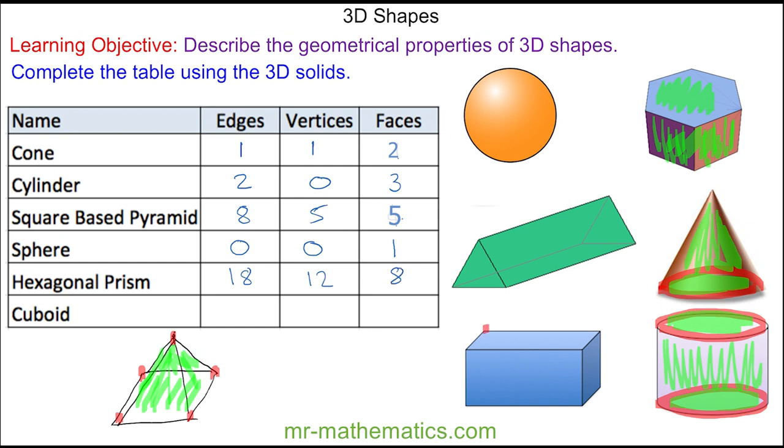For the cuboid, you can see we have four edges on top, four edges on the bottom face, and another four edges connecting the two, so we have a total of 12 edges. These 12 edges give us a total of eight vertices: four on the top, four on the bottom.